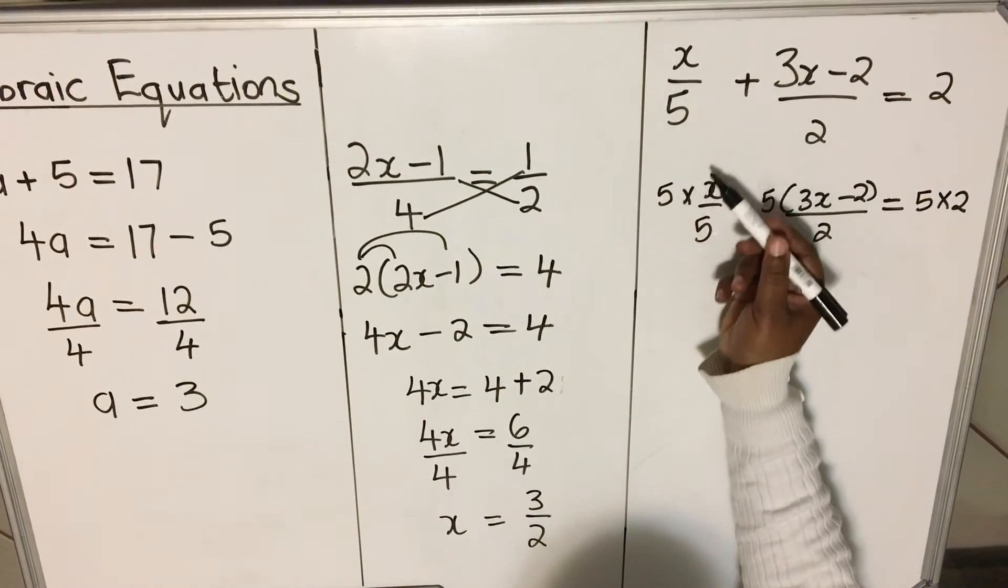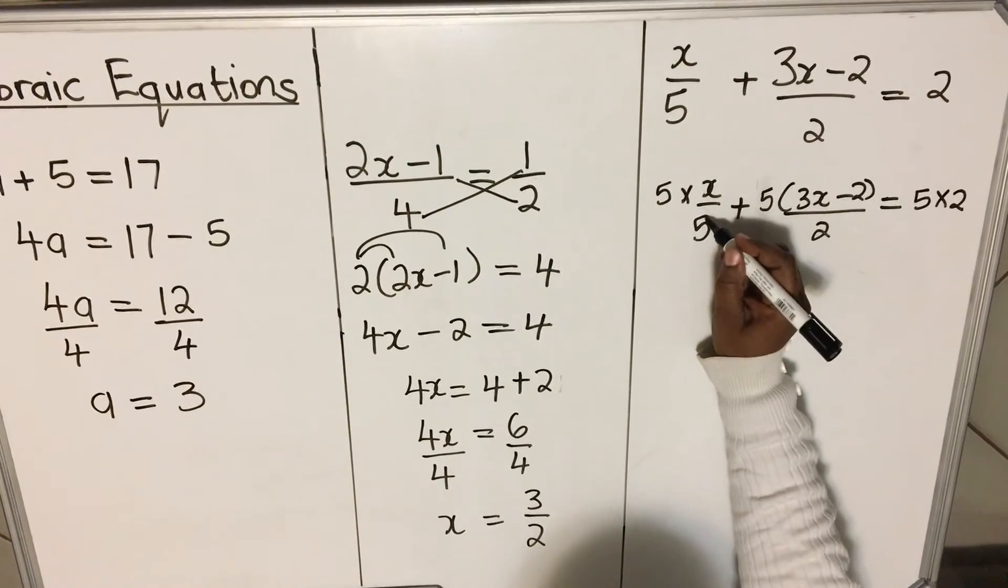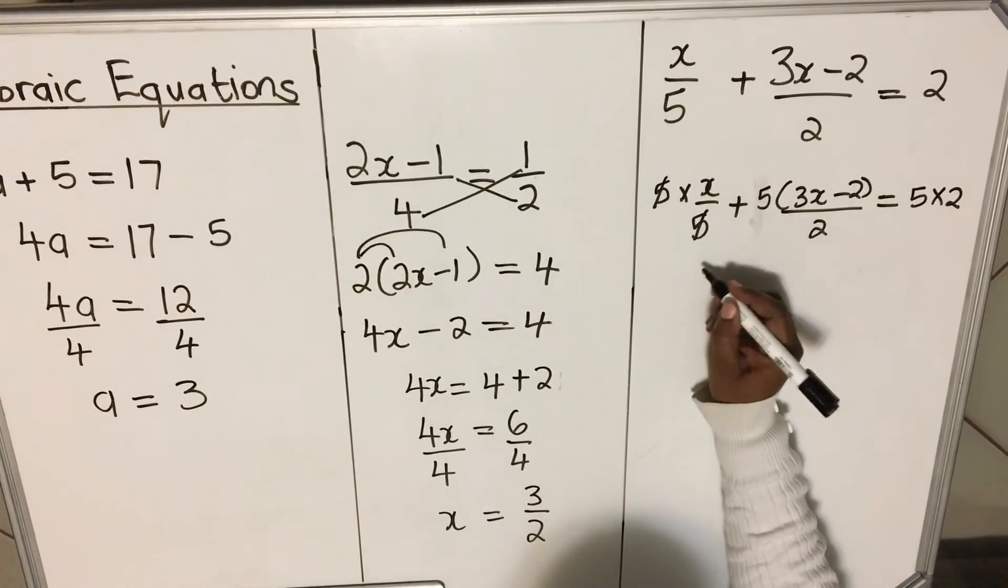First fraction, first denominator, multiply every term. What you do, it will cancel the 5 in this term.